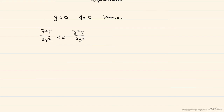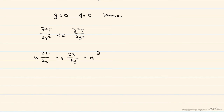The technique to non-dimensionalize the momentum equation was shown in a previous screencast. Here, we're going to non-dimensionalize the energy equation that was derived from analysis of a control volume. After that analysis, we have: u (the velocity in the x direction) times dT/dx, plus v (the velocity in the y direction) times dT/dy, is equal to alpha (the thermal diffusivity) times d²T/dy².